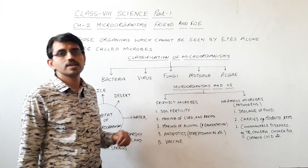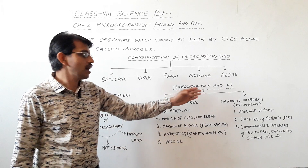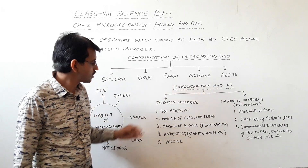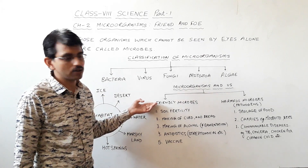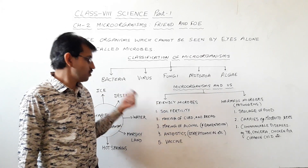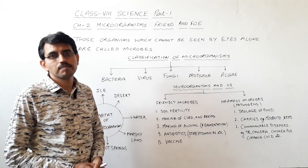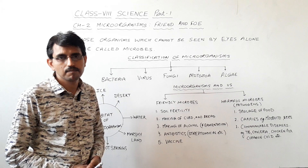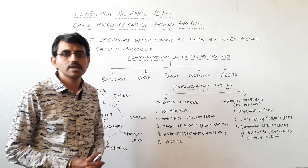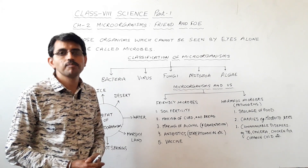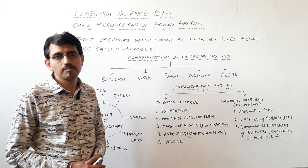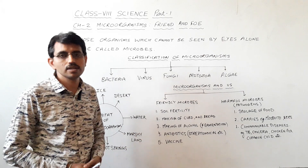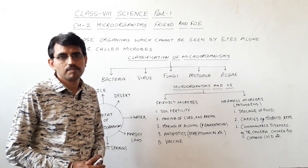Now, how are micro-organisms friendly and harmful for us? We will study this with the help of a flow diagram. First, we talk about the friendly behavior of micro-organisms. The first is soil fertility. The fertility of soil is because of the action of micro-organisms present in the soil. They are responsible for the breakdown of dead remains of plants and animals, converting organic substances into inorganic minerals, which increases the fertility of soil.